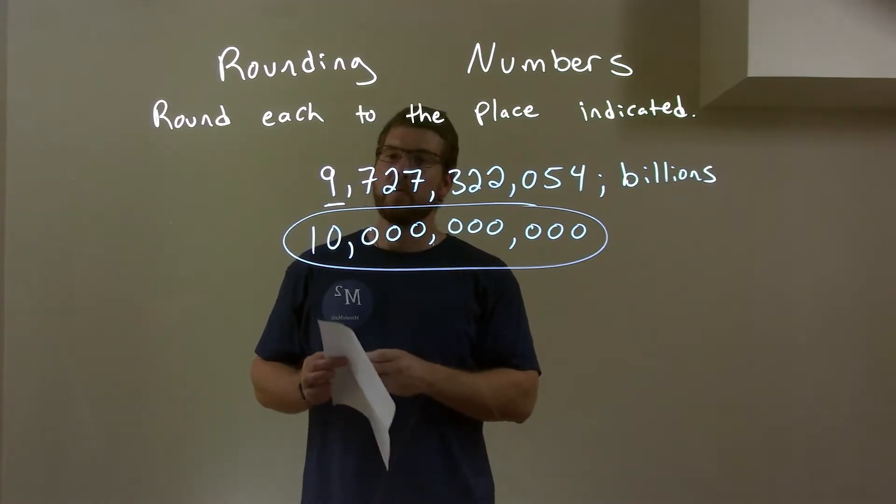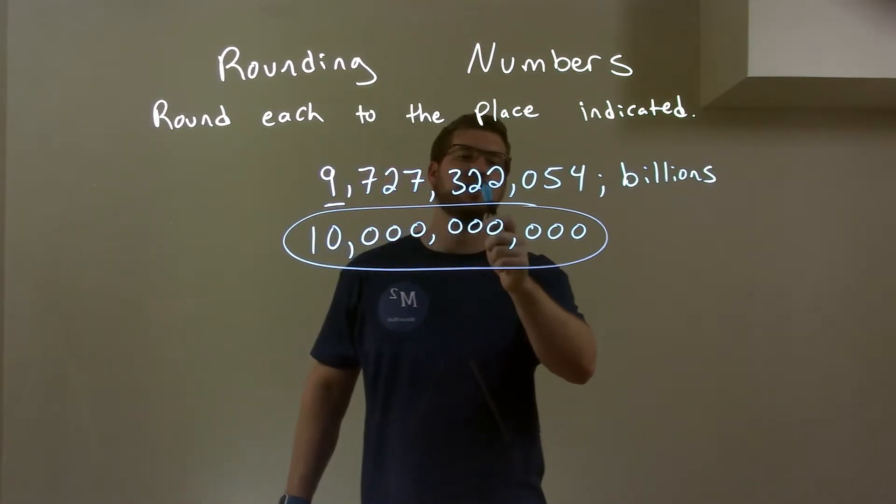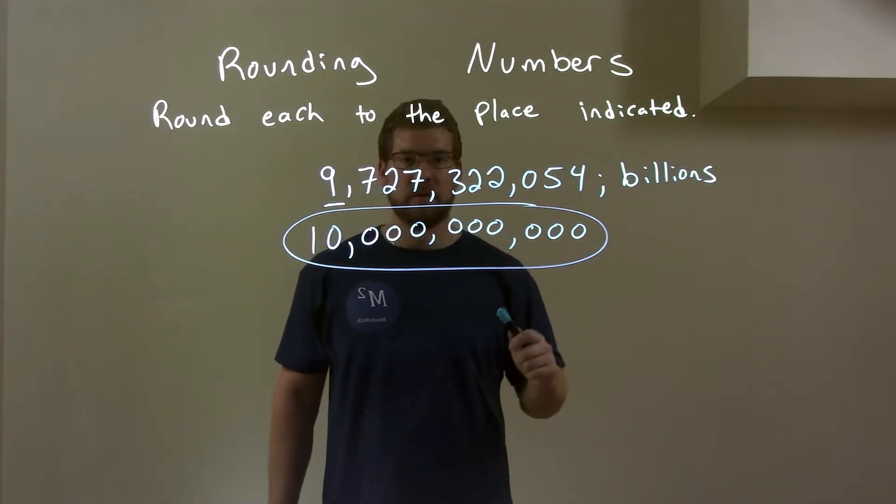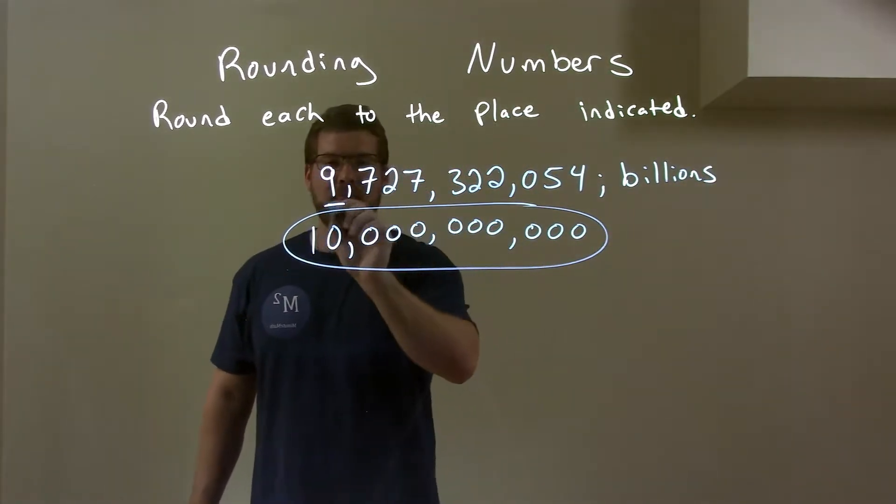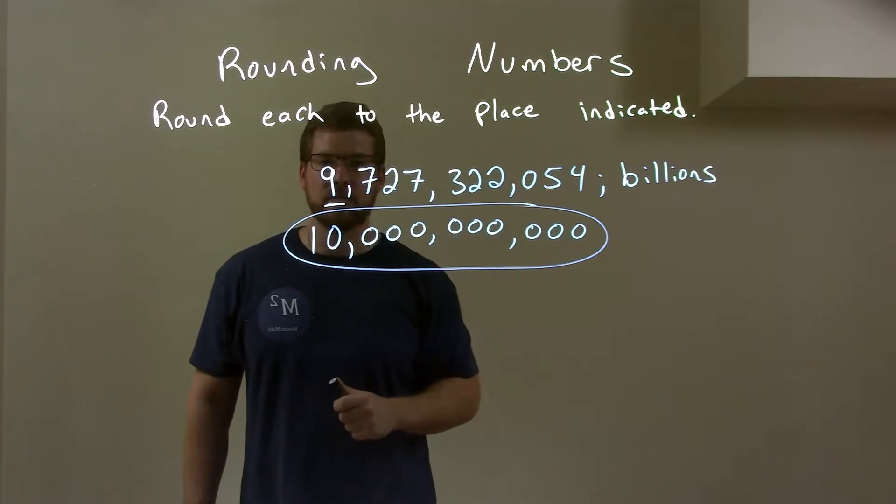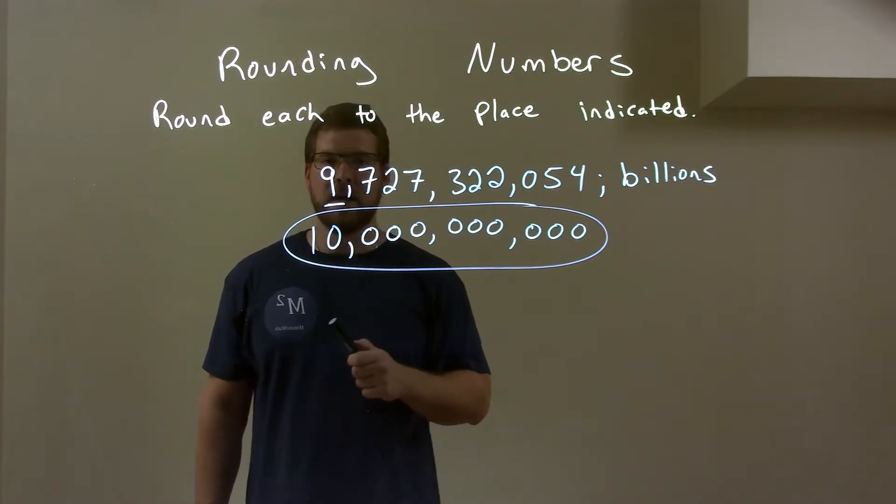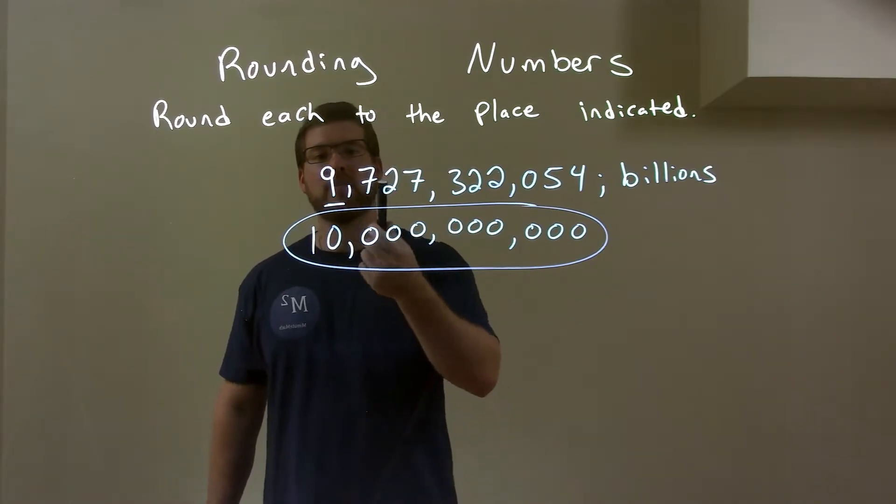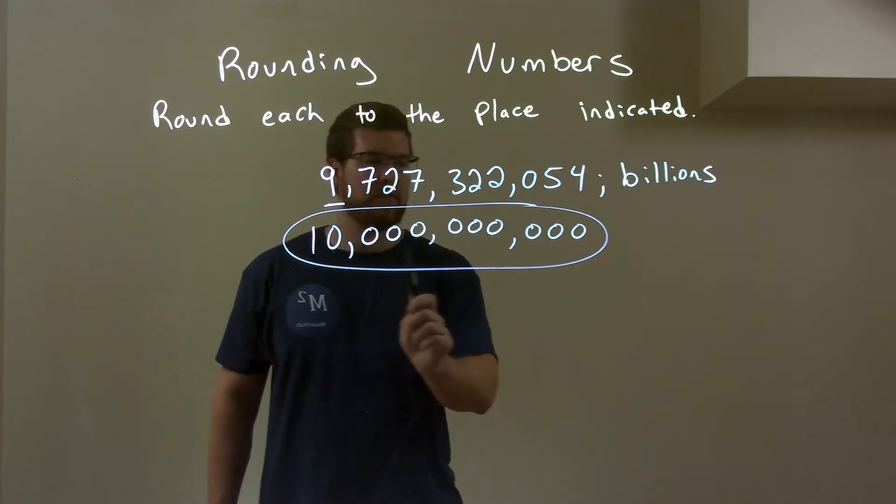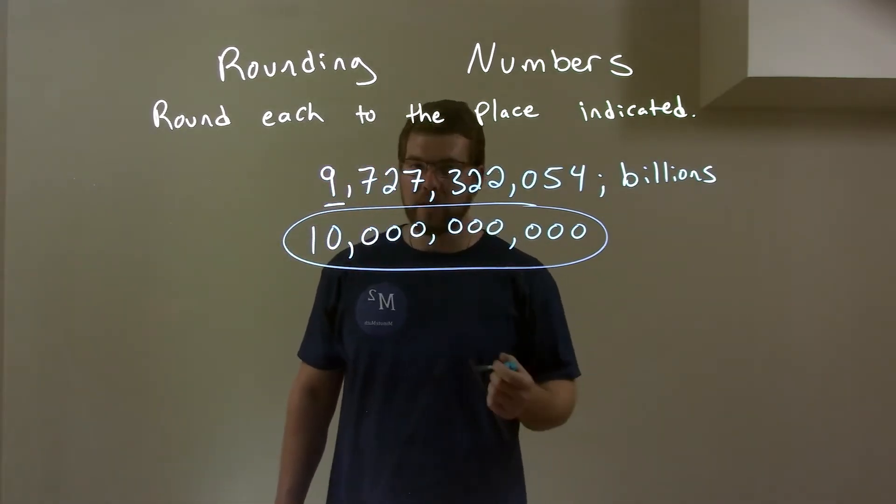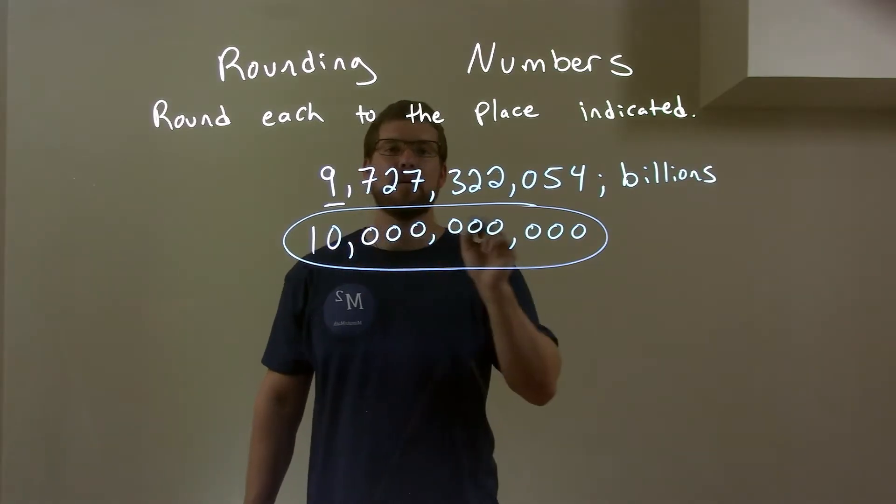So quick recap. We have 9,727,322,054 and we're rounding in the billions. Well, I indicated that this was that 9 right there in the billions place. Okay? I look to the right of that 9 and I see a 7. That 7 causes this 9 to round up to a 10. The rest are zeros. So our final rounded answer is just 10 billion.